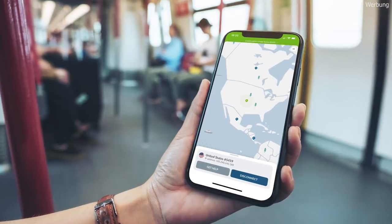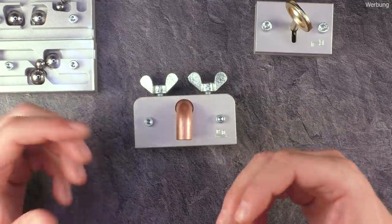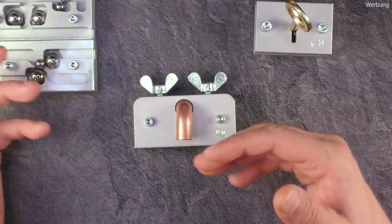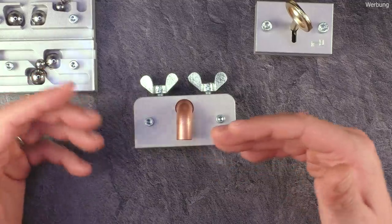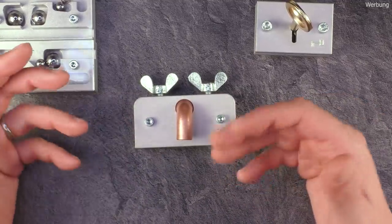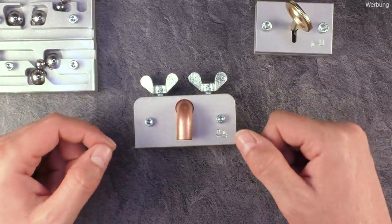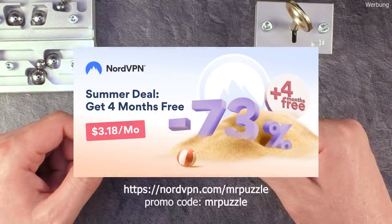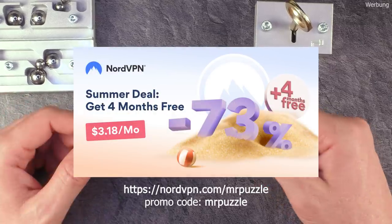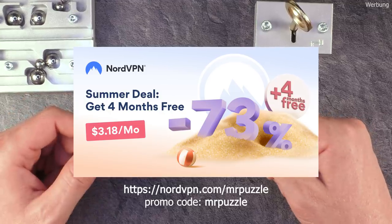And once you are connected you do not need to worry about your private data in public Wi-Fi anymore. Even your real IP address and location are hidden. It even enables you to access YouTube, Netflix, and social media in countries that are actually blocking those, same for computer games or any other kind of geo-restricted services. If this is interesting to you, go to NordVPN.com/MrPuzzle or use the code MrPuzzle to get a two-year plan plus a bonus gift with a huge discount.